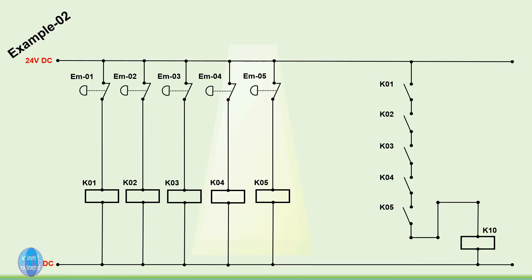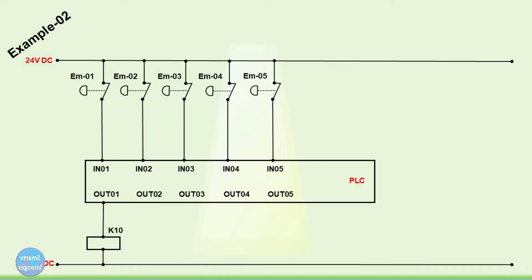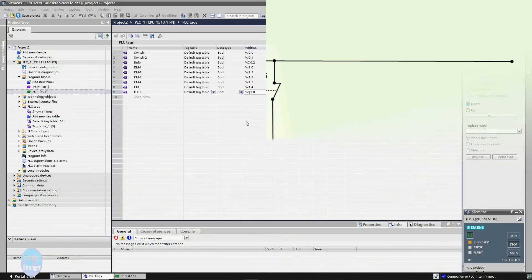This is a hard-wired logic, but we can convert it into a PLC program. In a PLC program, we can use the contacts of these emergencies as inputs and make the logic without using relays. This is cost-saving and easy to troubleshoot. When we install a PLC, the diagram becomes much simpler — a lot of wiring is removed and the circuit becomes straightforward.